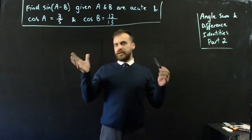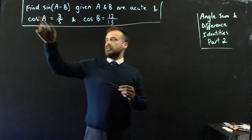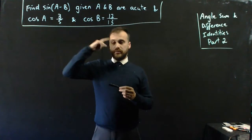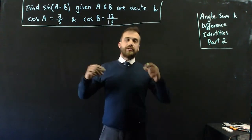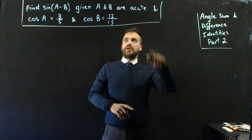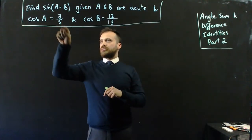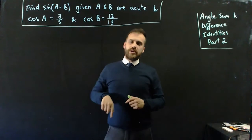Alright, so a bit tricky here, a few little moving parts. Find sine of a minus b, angle difference, given a and b are acute, less than 90 degrees in quadrant 1 of the unit circle. And cos a equals 3 on 5 and cos b equals 12 on 13.